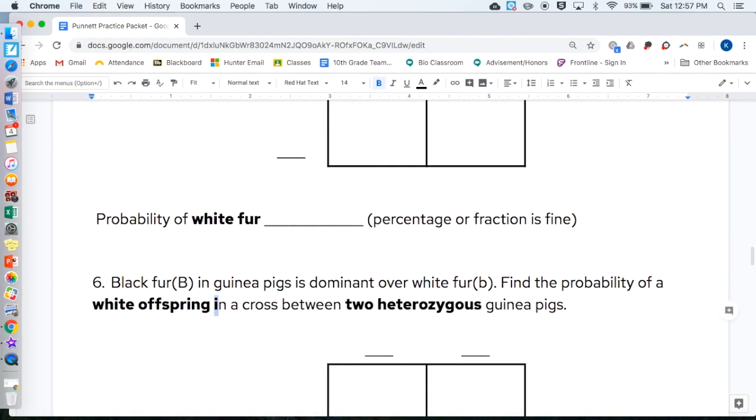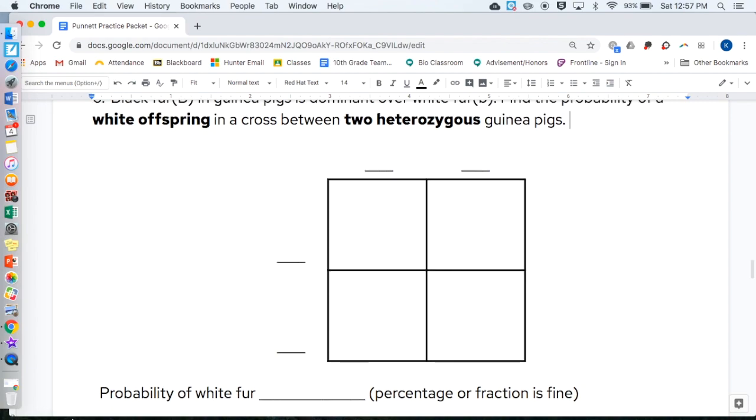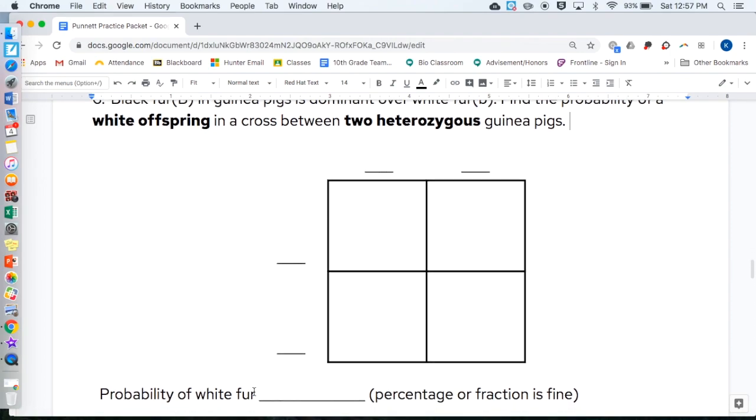Number six. Black fur, capital B, in guinea pigs is dominant over white fur, lowercase b. Find the probability of a white offspring in a cross between two heterozygous guinea pigs. If you're stuck on that vocab, pause and think it through. Then find the probability of white fur and write it on the line.